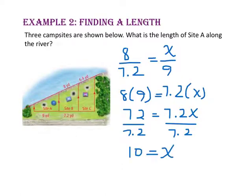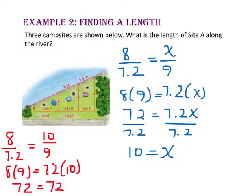Don't forget to check your answer by substituting the value for x, 10, into your original proportion. Since 72 does equal 72, we know we are correct.